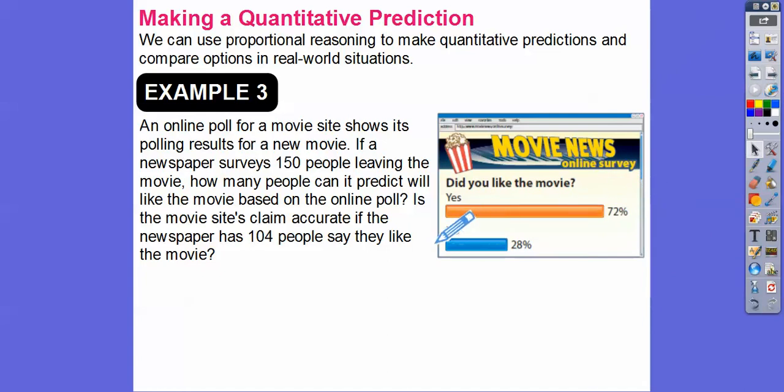So we want to find what's 72% of 150 so we can answer this part right here. How many people can we predict to like the movie based on the poll? If the movie site's claim is accurate, and the newspaper said they had 104 people that likes the movie, is it a nice estimate right there?